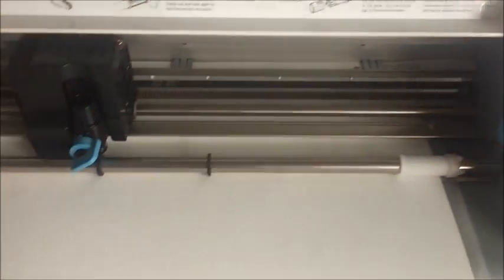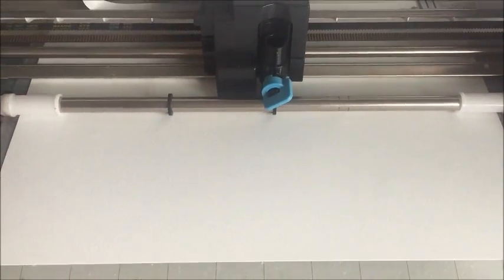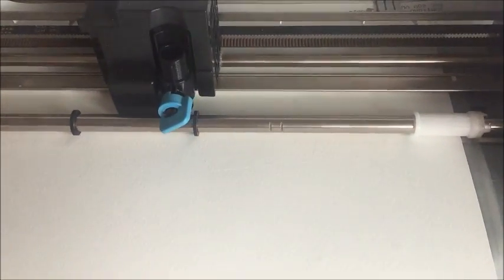So I'm using my Silhouette Cameo program in order to design these shapes and then I'm running it through the cutter. It's going to cut these shapes out as well as perforate the lines in between so that I can easily fold and assemble these shapes.